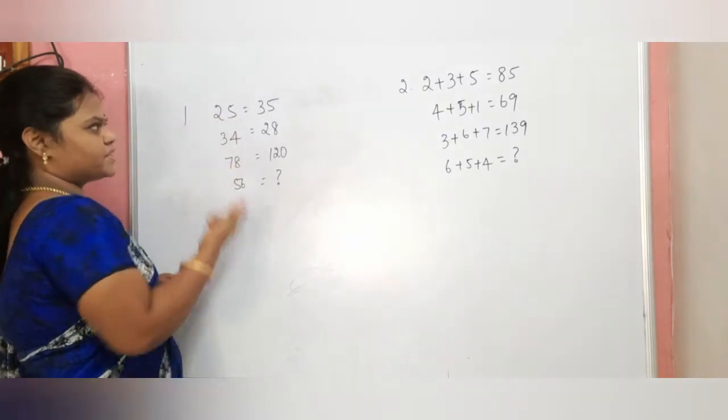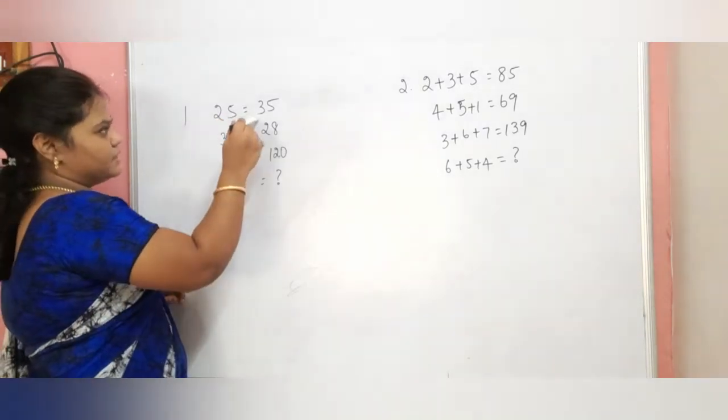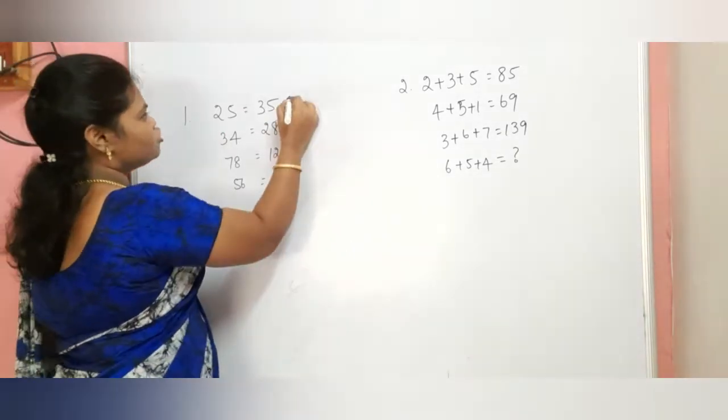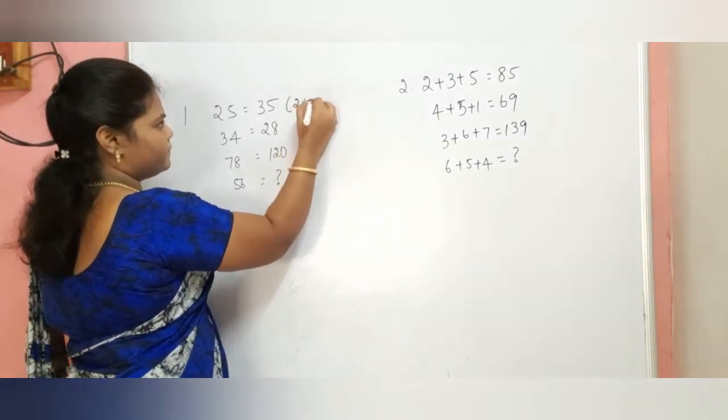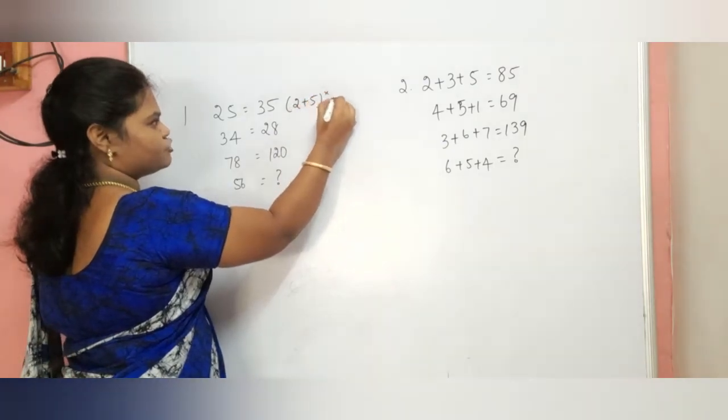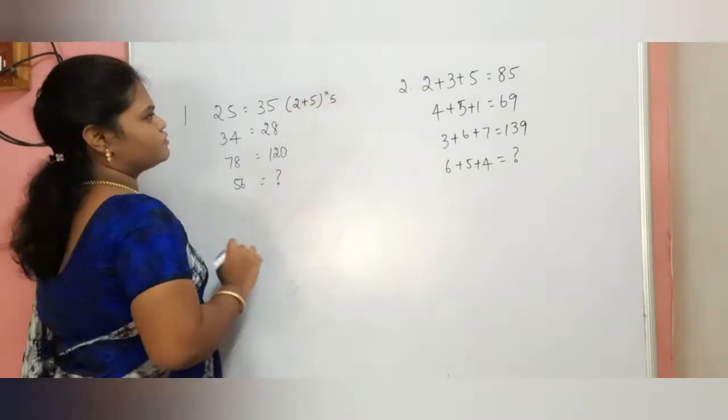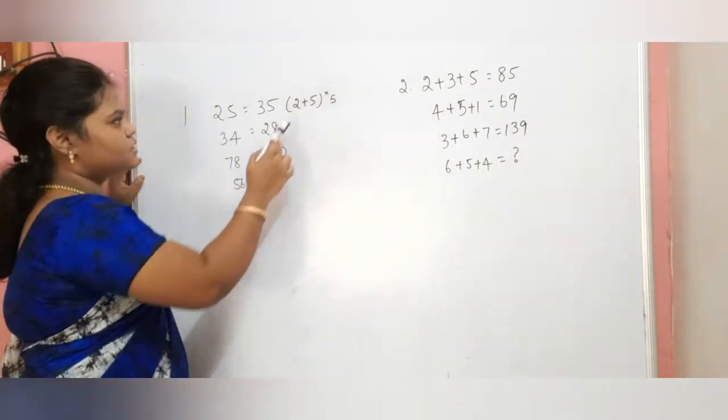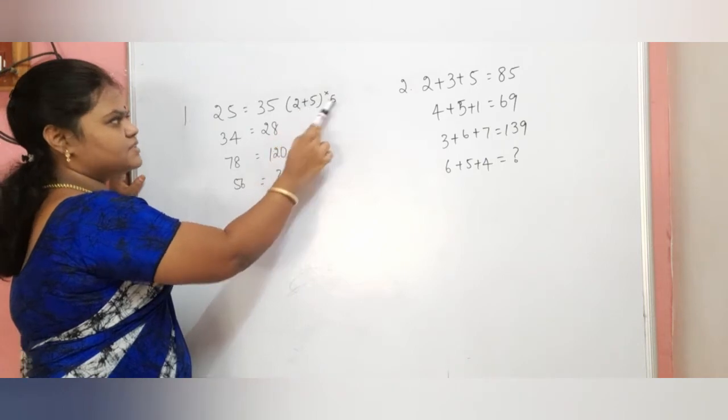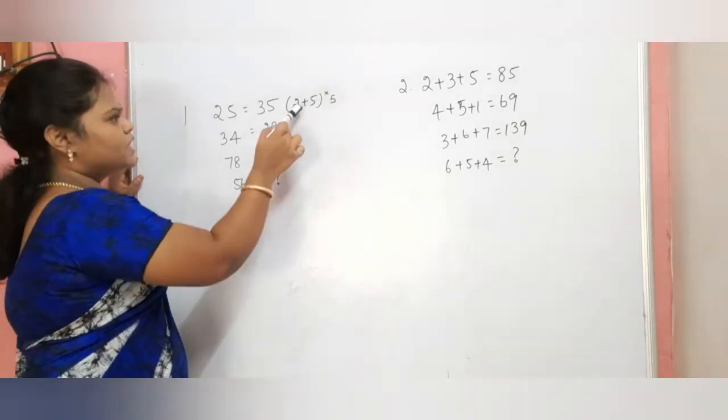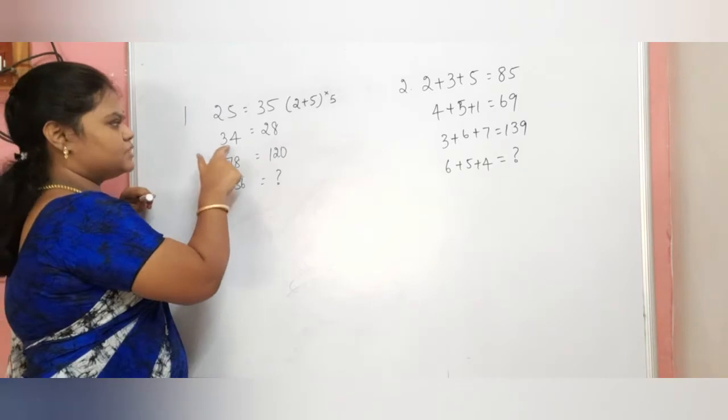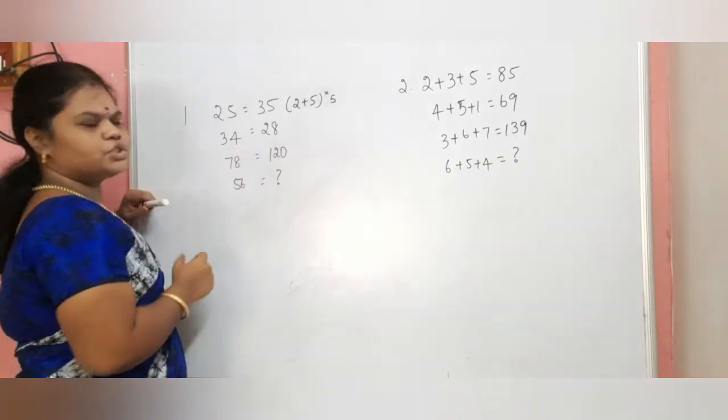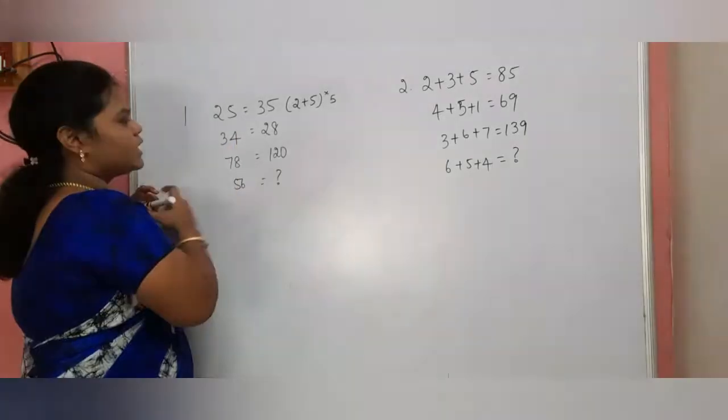2 plus 5 equals 7, 7 into 5 equals 35. I am going to show you the logic. 3 plus 4 equals 7, 7 into 4 equals 28. Same now. So, this is the logic.